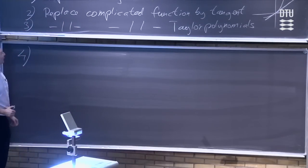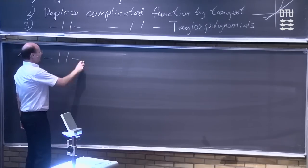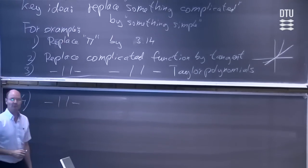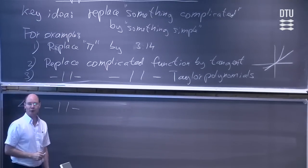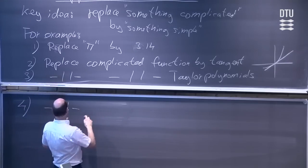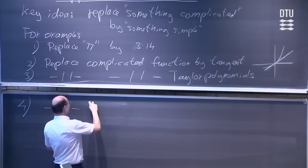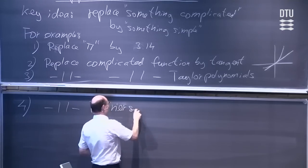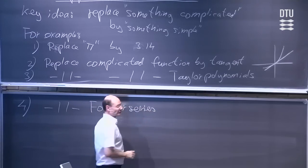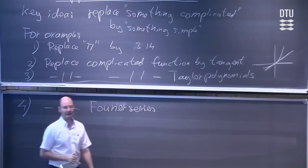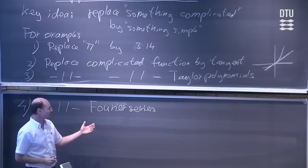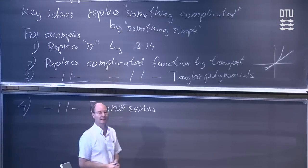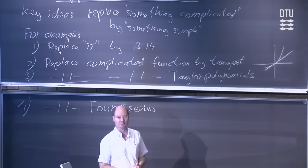We could move on and also think about functions described by a Fourier series. A Fourier series is an infinite series, so it is difficult to handle. We could think about replacing it by a finite partial sum.